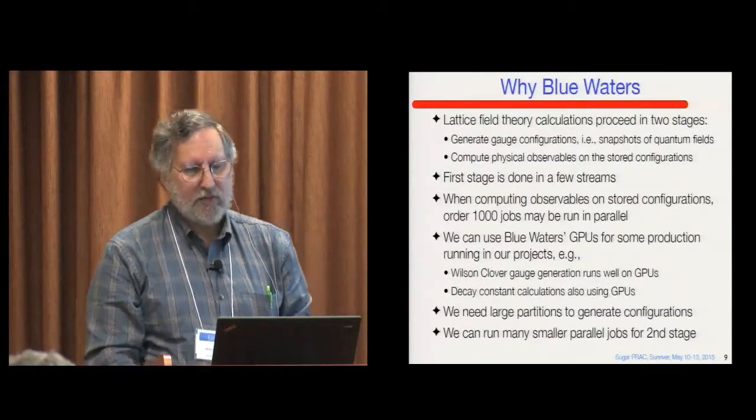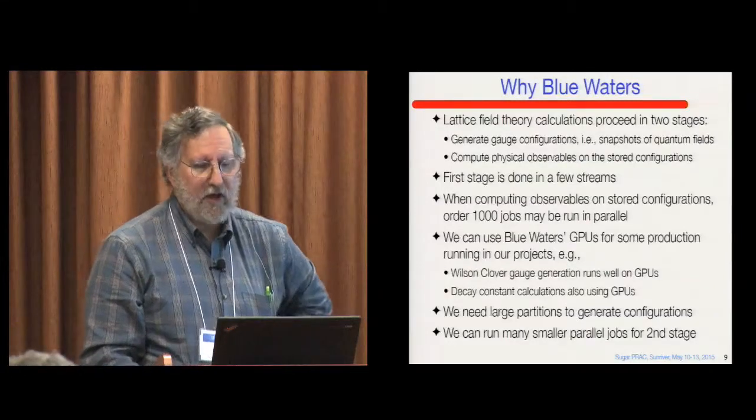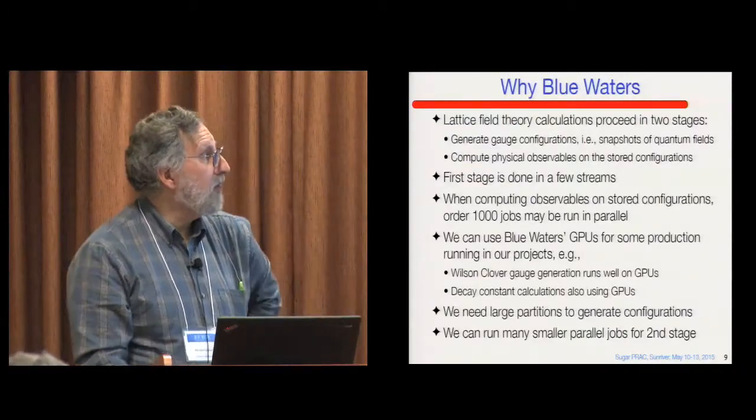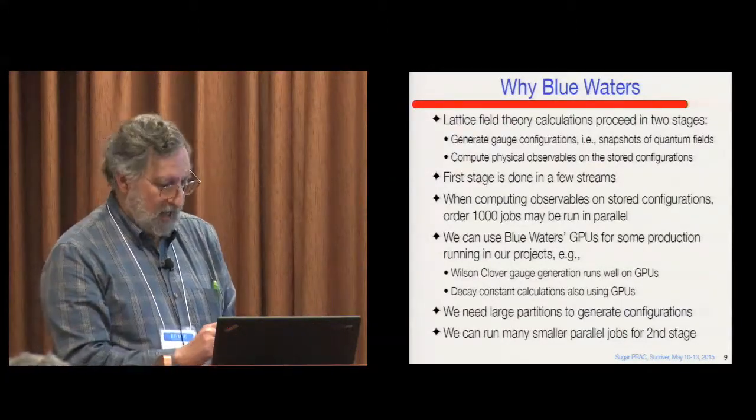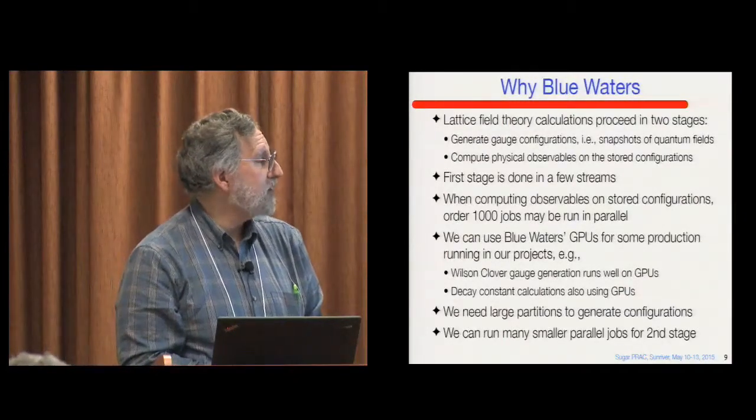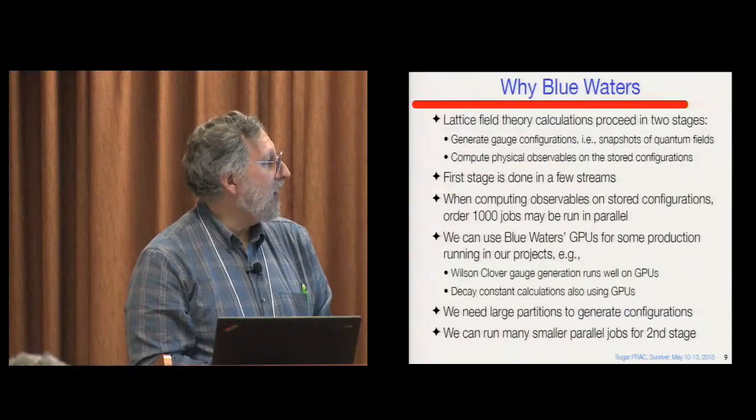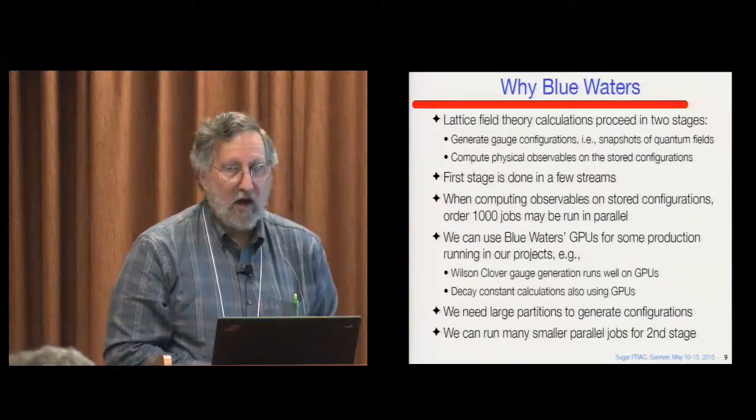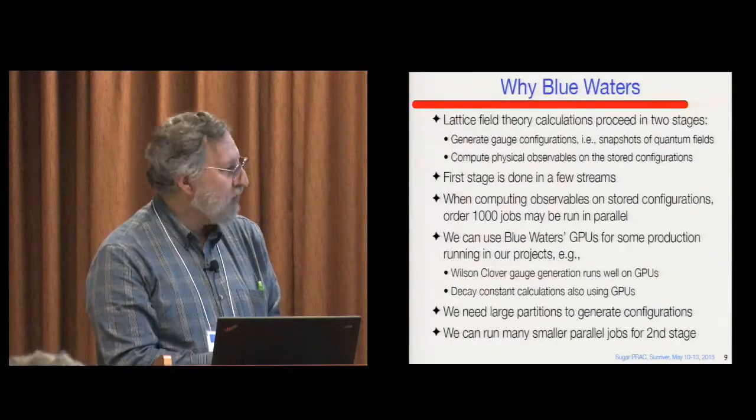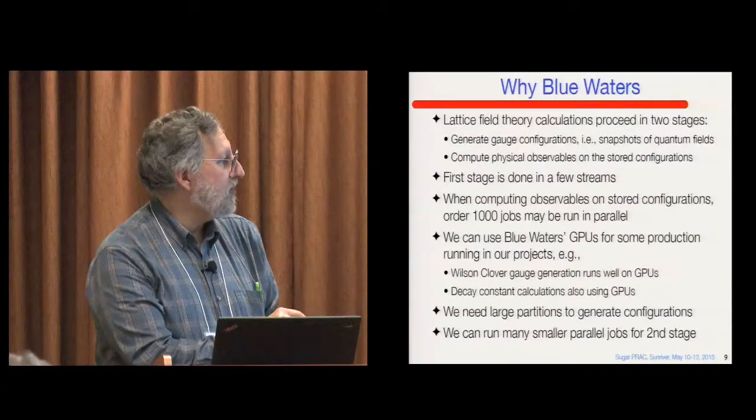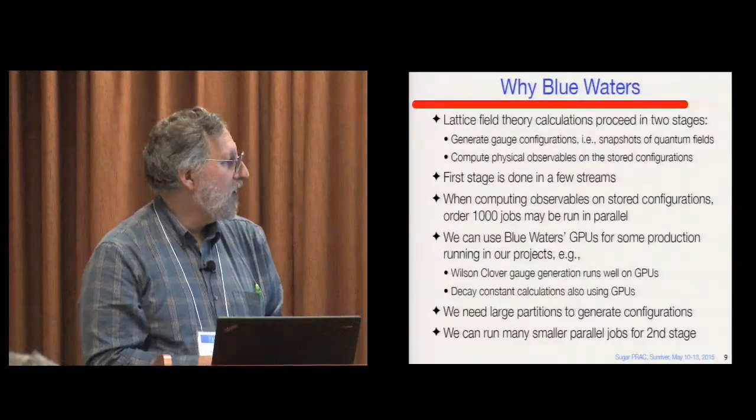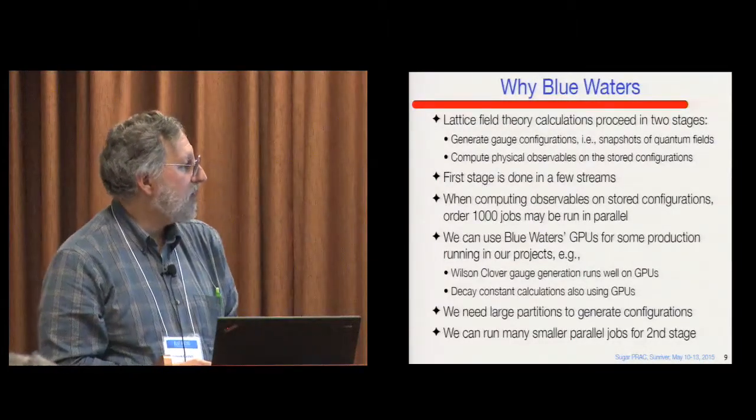So using Blue Waters, we proceed in two stages. We generate gauge configurations. That's done in just a few streams. Then we can compute observables on these configurations. And often we have a thousand snapshots of the fields on which we later want to run physics measurements, as we call them. And those can be run in parallel. So we have a combination of capability needs and capacity needs. And on Blue Waters, some of our jobs run particularly well on the GPUs. This is one example. And we're also running some of the decay constant calculations on the GPUs. We also run just on the CPU side.